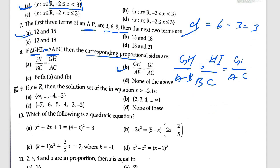Question number 9: if R and x is a member of family R, you have to derive the equation. The correct answer shows that x equals minus 2, which is not given anywhere, so the answer is absent. Question 10: which of the following is a quadratic equation following the rule AX squared plus BX plus C equals zero?